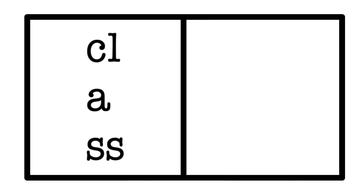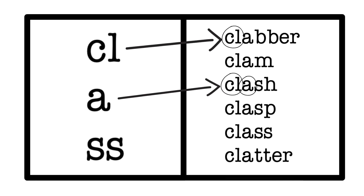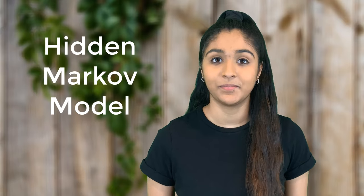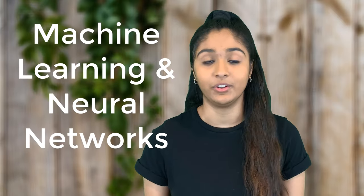The computer then runs these phonemes through complex models that compare them to words in its pre-built dictionary. But there's a catch — human language isn't so simple. We all know that humans speak with different accents, slangs, and mispronunciations, and these variations aren't in a computer's dictionary. This is where models such as the hidden Markov model come in. These models are too complex to fully cover here, but just know that speech recognition uses them to understand the intricacies of human language.